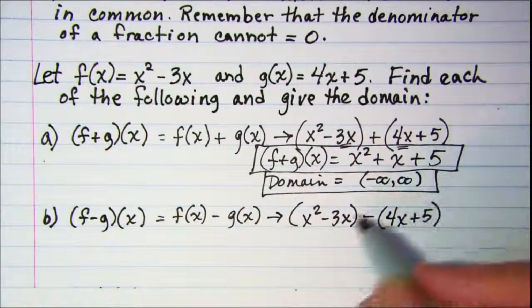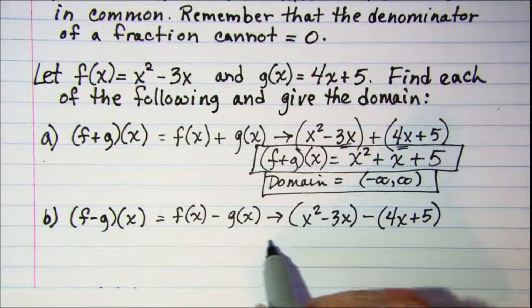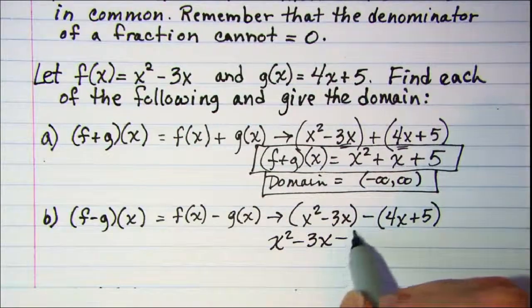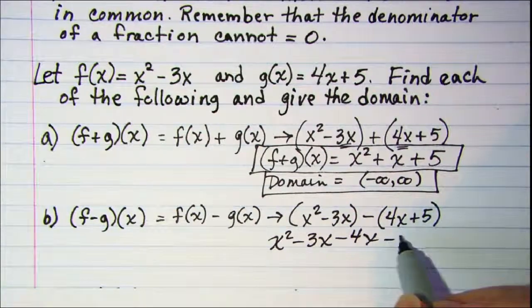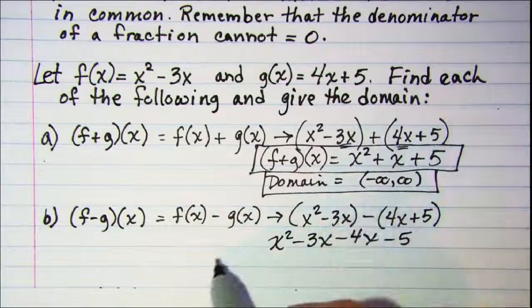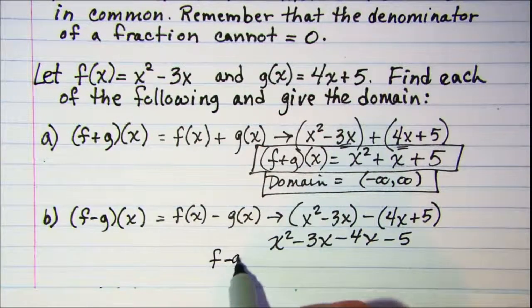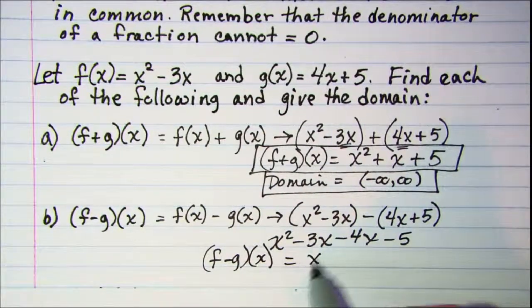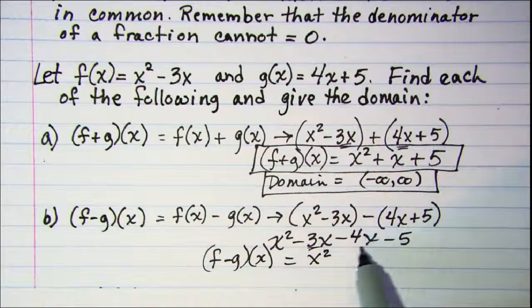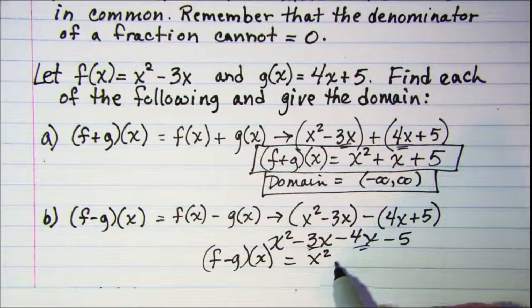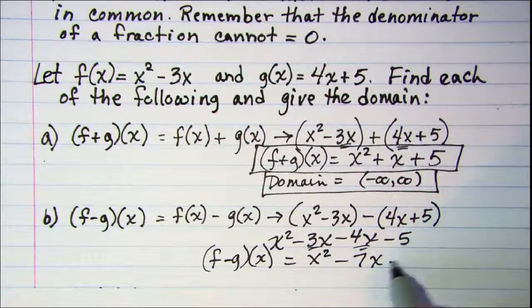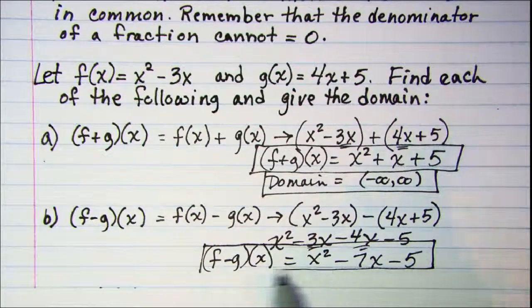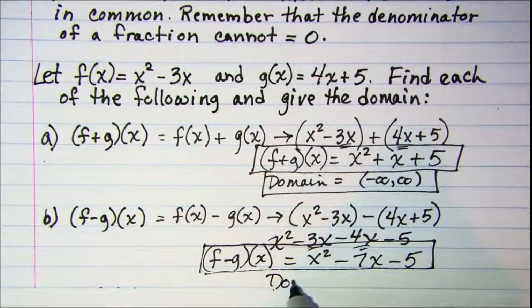Now in this one we'll need to distribute our negative so this is x squared minus 3x minus 4x minus 5. So our difference is x squared and then negative 3x and negative 4x is negative 7x minus 5. The domain again is still all real numbers.